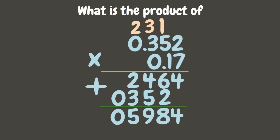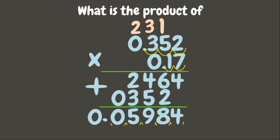Now remember, the total number of decimal places in the factors should be the same in the product. So let's count: 1, 2 in one factor, and 1, 2, 3 in the other — that's 5 total. Therefore we are going to put the decimal point in the product 5 decimal places from the right: 1, 2, 3, 4, 5. Let's put zero. Now this is our final answer.